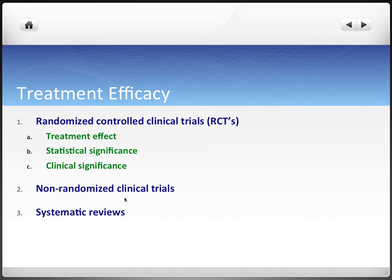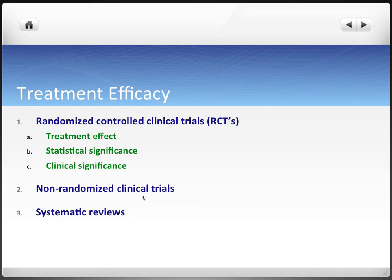Treatment efficacy has three primary studies associated with it. Randomized Controlled Clinical Trials, or RCTs, are one of the best study methods available and they look at treatment effect primarily — how effective is this treatment? Non-randomized clinical trials are useful in certain scenarios, and systematic reviews are the best because they gather together data from a bunch of different sources.